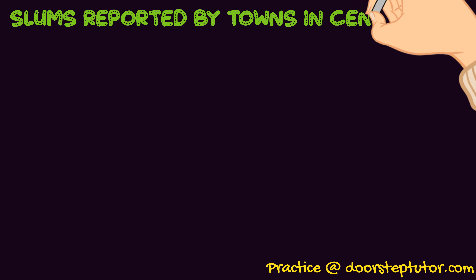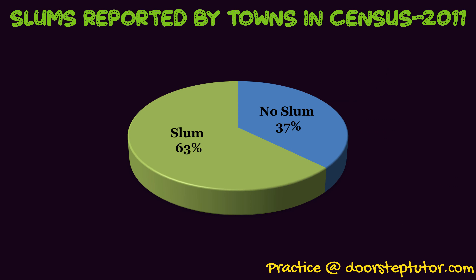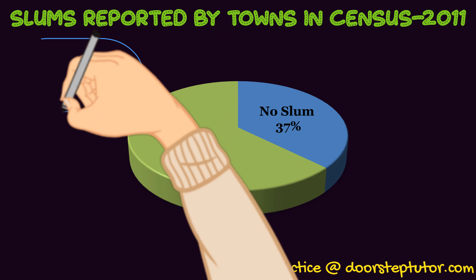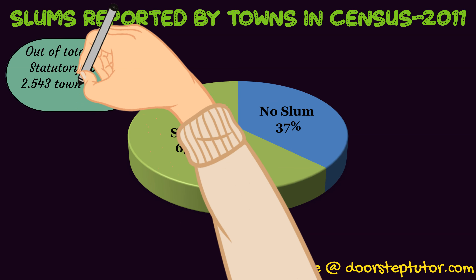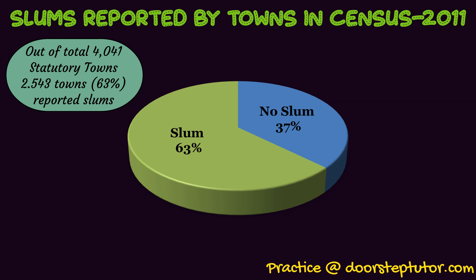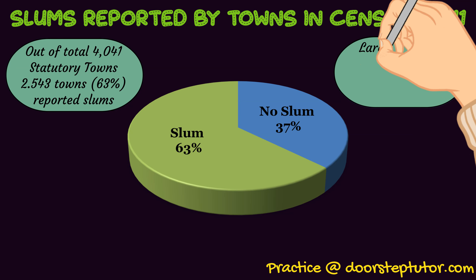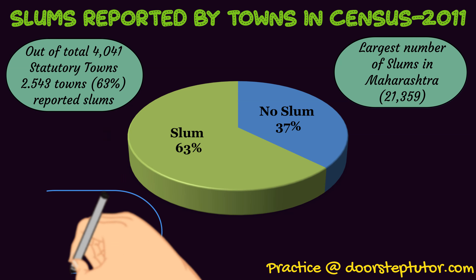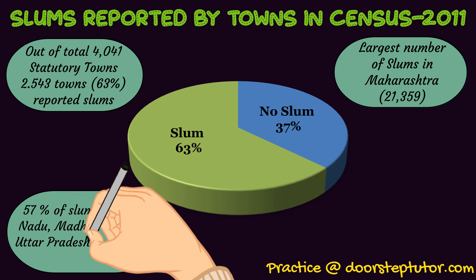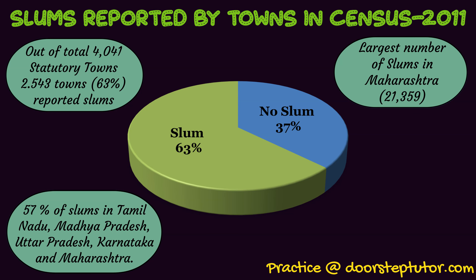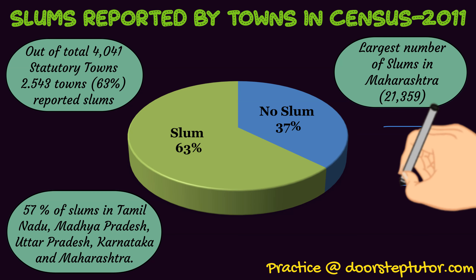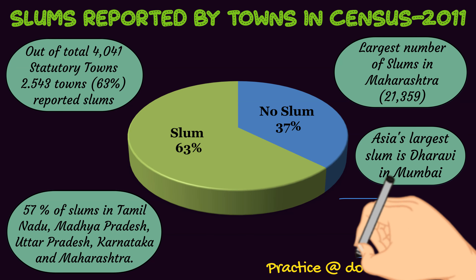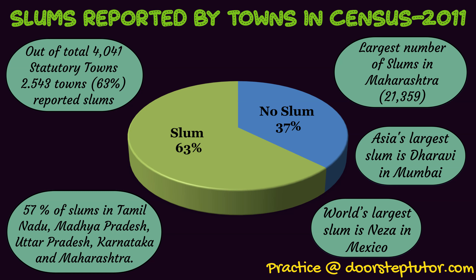Looking at some facts from the Census of India 2011, 37% of towns reported no slums and 63% reported that there were slums. Out of a total of 4,041 statutory towns, slums were reported from 2,543 towns — constituting that 63%. The largest number of slums lies in Maharashtra. 57% of slums in India are located in Tamil Nadu, Madhya Pradesh, Uttar Pradesh, Karnataka, and Maharashtra. Asia's largest slum is Dharavi in Mumbai and the world's largest slum is Neza in Mexico.